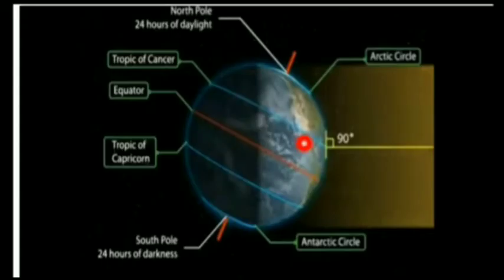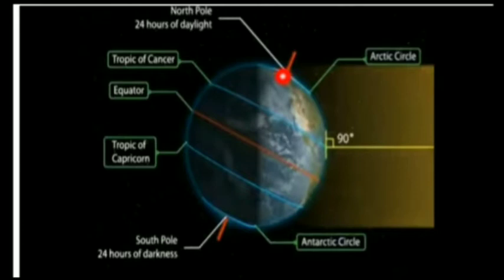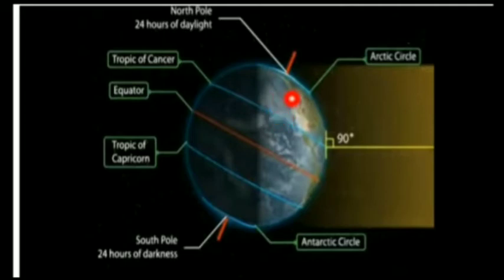During summer solstice, the sun rays fall directly over the Tropic of Cancer, forming a 90-degree angle. The northern hemisphere, including the North Pole, is getting sunlight for 24 hours. In contrast, the South Pole and the southern hemisphere experience 24 hours of darkness. So the northern hemisphere is experiencing summer solstice while the southern hemisphere is experiencing winter solstice.